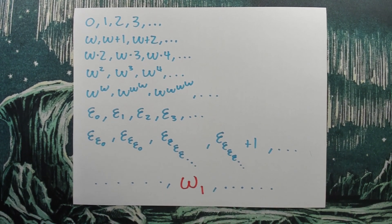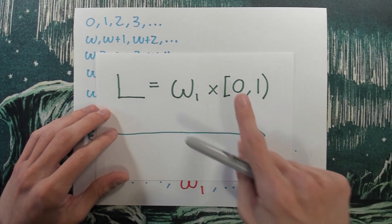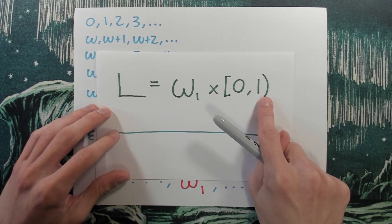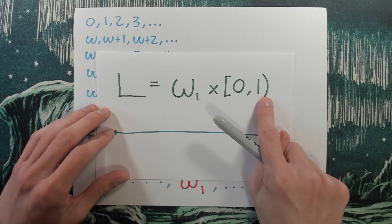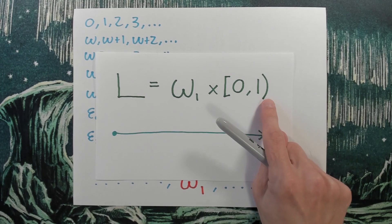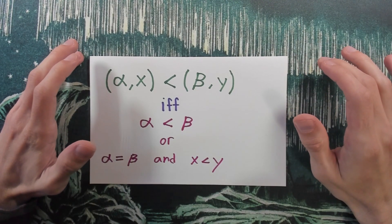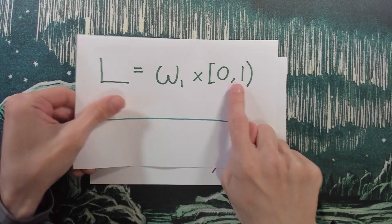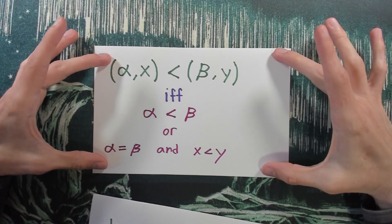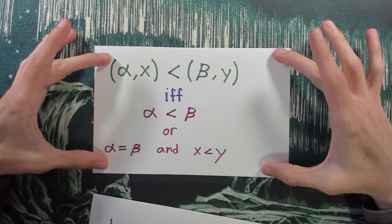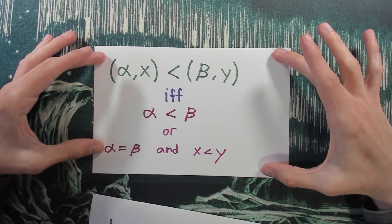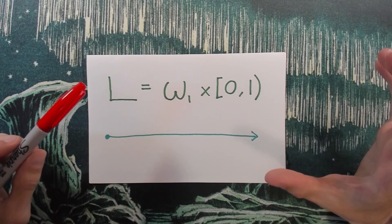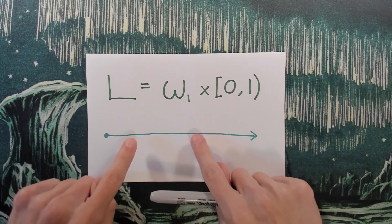What we want to do is put omega-one number of copies of these intervals added together — and that's the long line. We do have to describe what the topology on the long line is. We're going to take omega-one cross [0,1) and put the lexicographic ordering on it, and then the topology will just be the order topology, taking as a sub-basis all of the open rays.